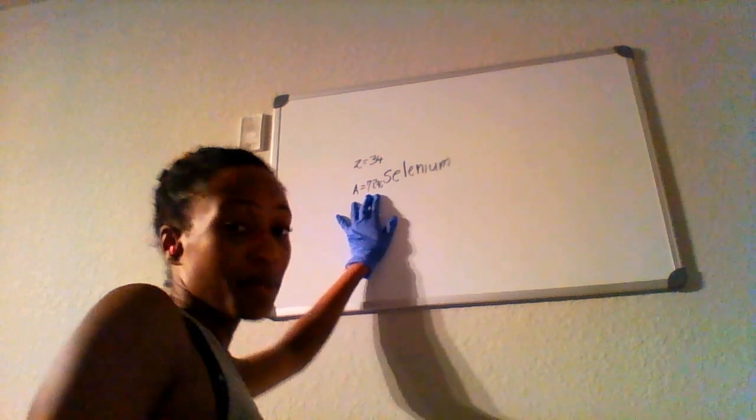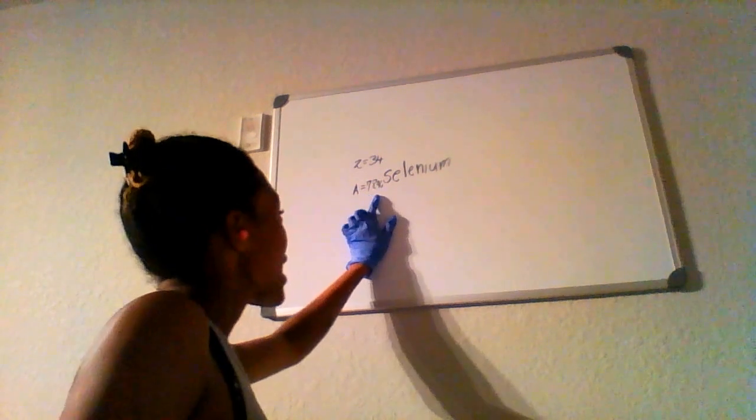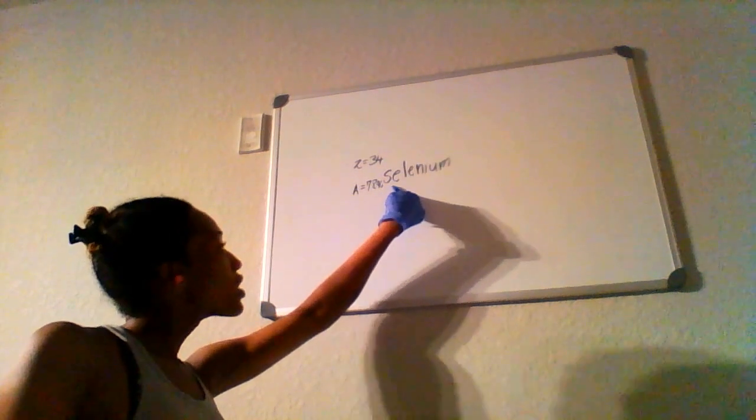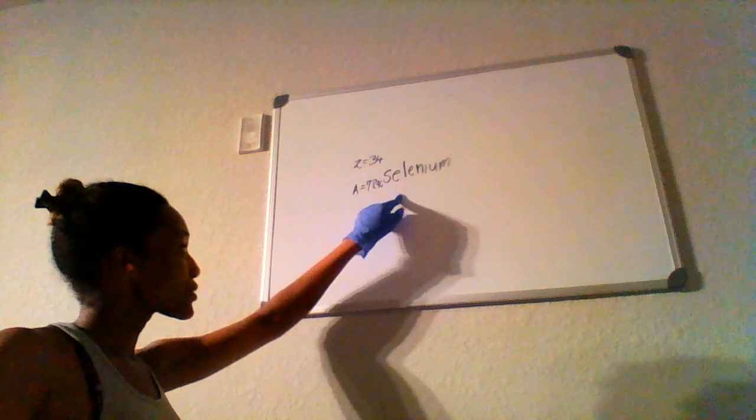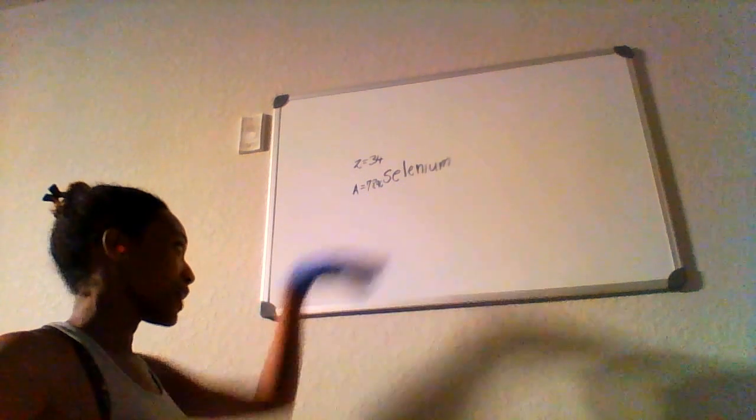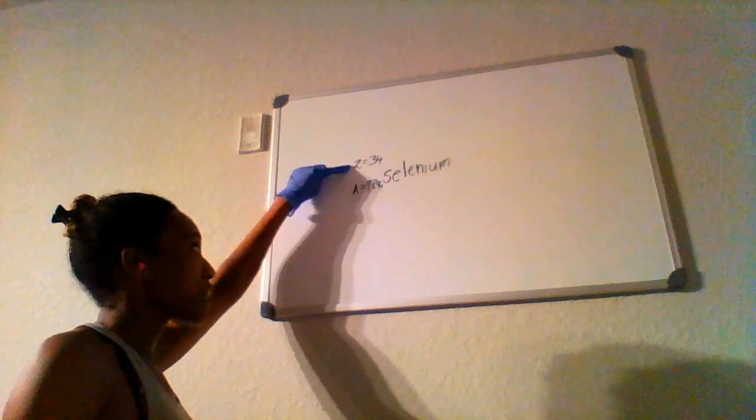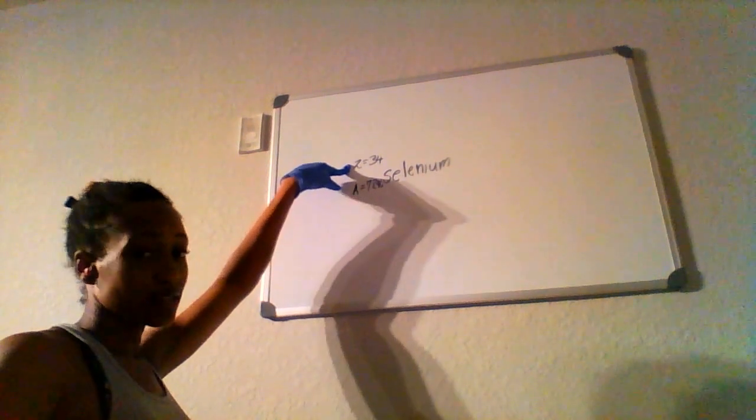And this number will vary depending on your source and whether or not they extend the amount of digits after the decimal place or they round up or down. So this number is pretty arbitrary, but the atomic number is constant.